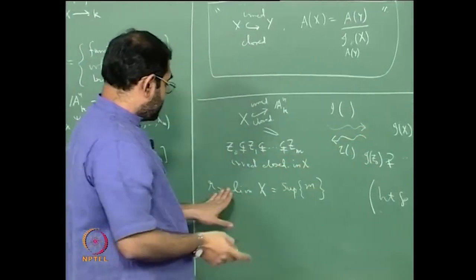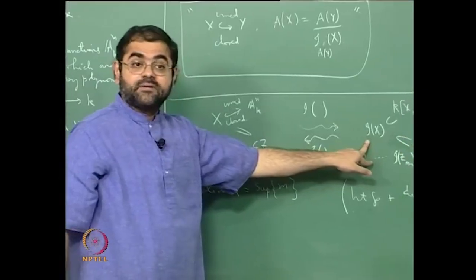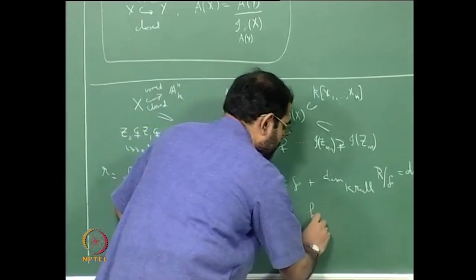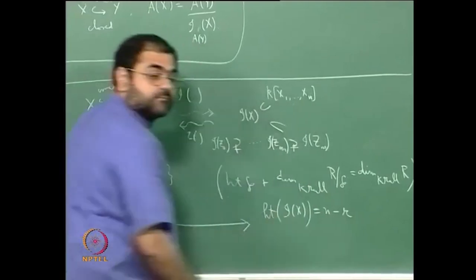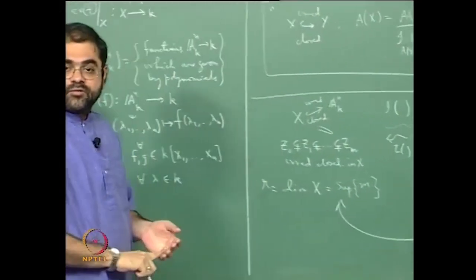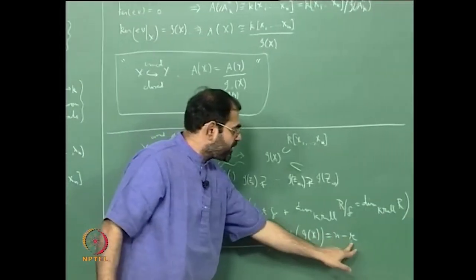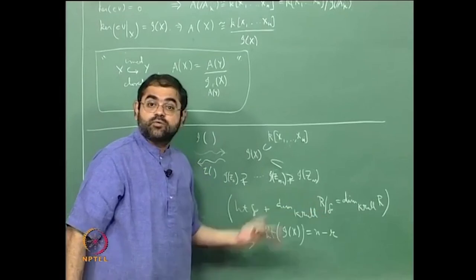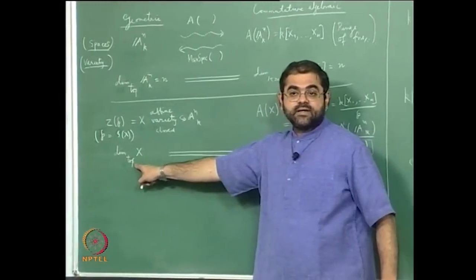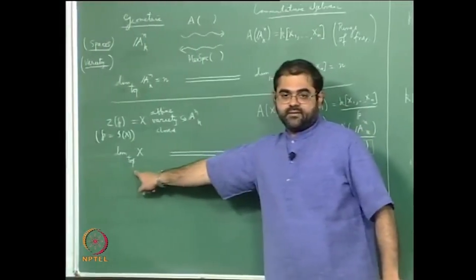If the dimension of X is r, this corresponds to the height of I(X) being n−r, because r + (n−r) equals the Krull dimension of the whole polynomial ring, which is n. And n−r is the Krull dimension of the quotient — but what is the quotient? The quotient is the ring of functions. That is why the topological dimension of X corresponds to the Krull dimension of the ring of functions — that explains why these two are equal.